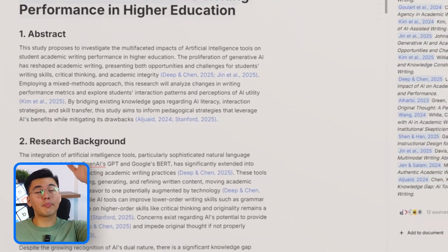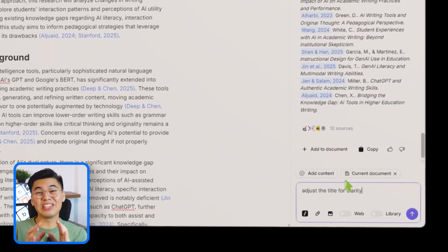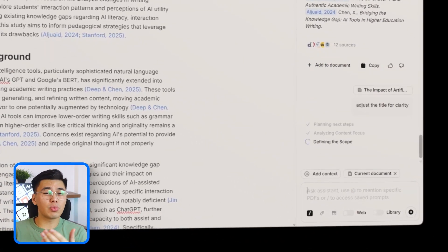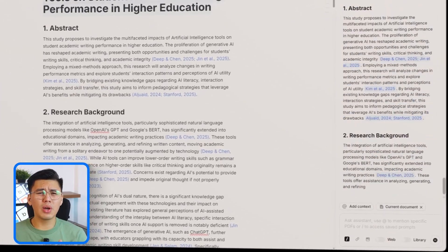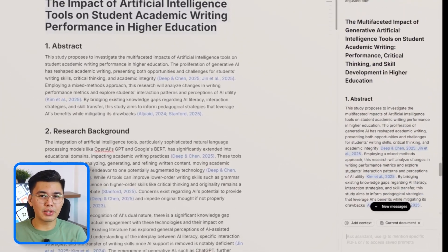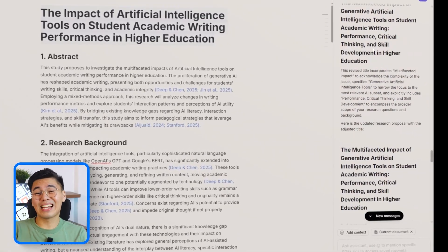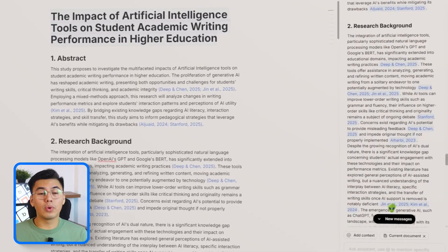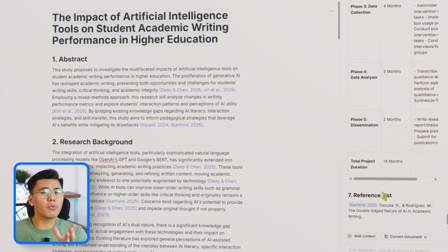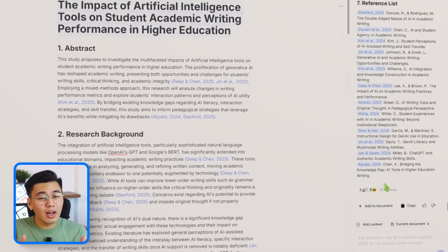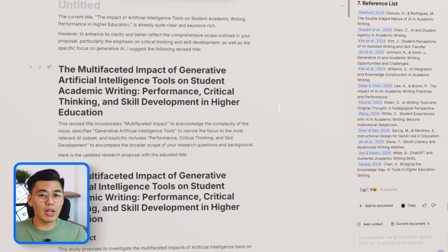Alright, we'll start right at the top with the title. I'm going to highlight the generated title and use Jenny's rewrite and regenerate options to explore better variations. Each result gives us a slightly different version - some with clearer keywords, some with a more formal academic tone,